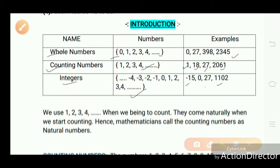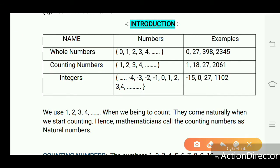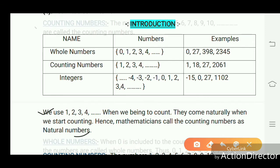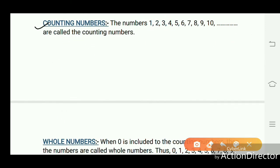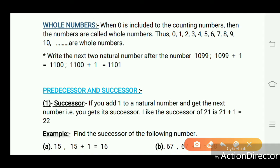We use 1, 2, 3, 4 and other numbers when we bring to count — they come naturally when we start counting. Hence, mathematics calls the counting numbers natural numbers. The numbers 1, 2, 3, 4 and so on are called counting numbers. When 0 is included with the counting numbers, they are called whole numbers — thus 0, 1, 2 and other numbers are whole numbers.